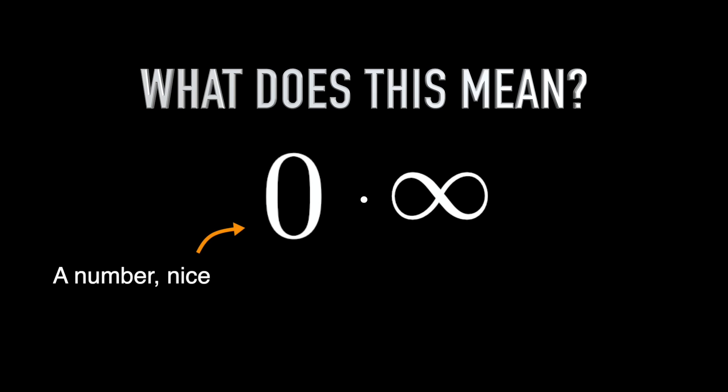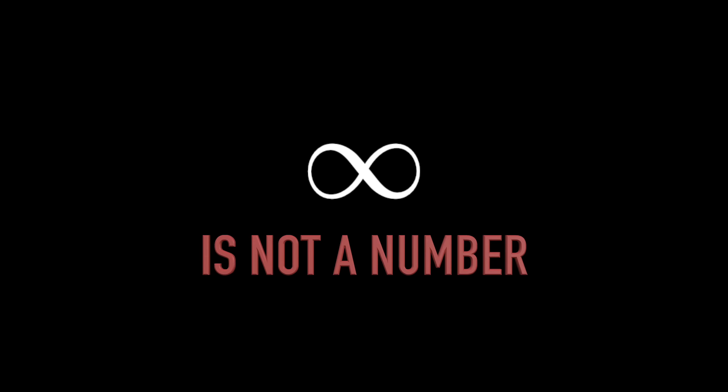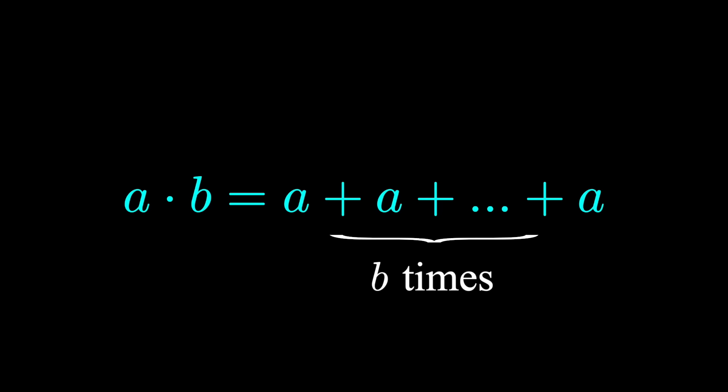We know what zero is — it's a number. We know what multiplication is — it's an arithmetic operation. What's infinity? Well, that question probably deserves its own video, and there are certainly multiple interpretations and definitions for infinity. But for now, let's keep it simple and just settle on the fact that infinity is an idea — a concept of something without bound. In particular, infinity is not a number. And when we talk about arithmetic, multiplication in this case, we mean multiplying two numbers. And in this context, zero times infinity makes no sense.